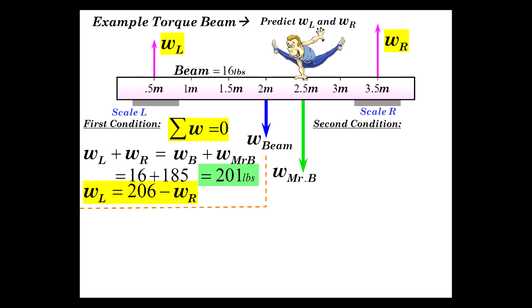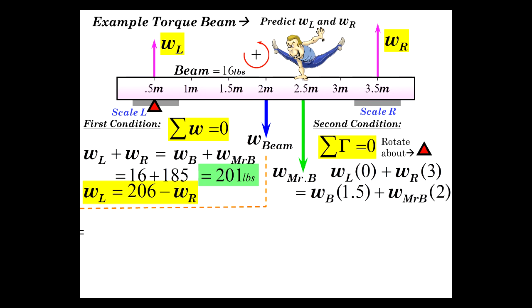Now we need another equation. So the second condition for equilibrium will give us that second equation. Sum of the torques is equal to zero. We'll rotate it about this triangle here. And we're going to consider going counterclockwise, a positive sense of rotation. So let's go counterclockwise first. Weight left times zero plus weight right, this weight over here, through a moment arm of three meters equals the clockwise torques. Weight of the beam times 1.5. There's 1.5 meters here, plus 2 meters times my weight. So my weight times 2.